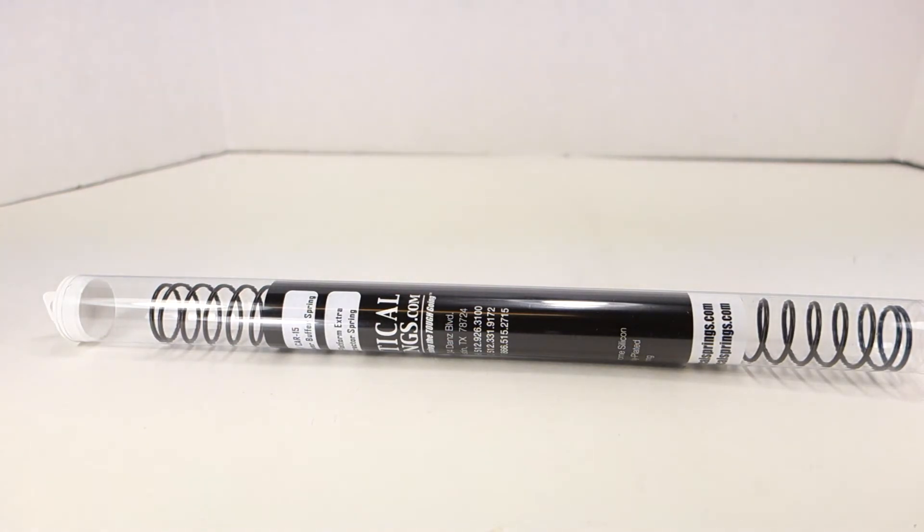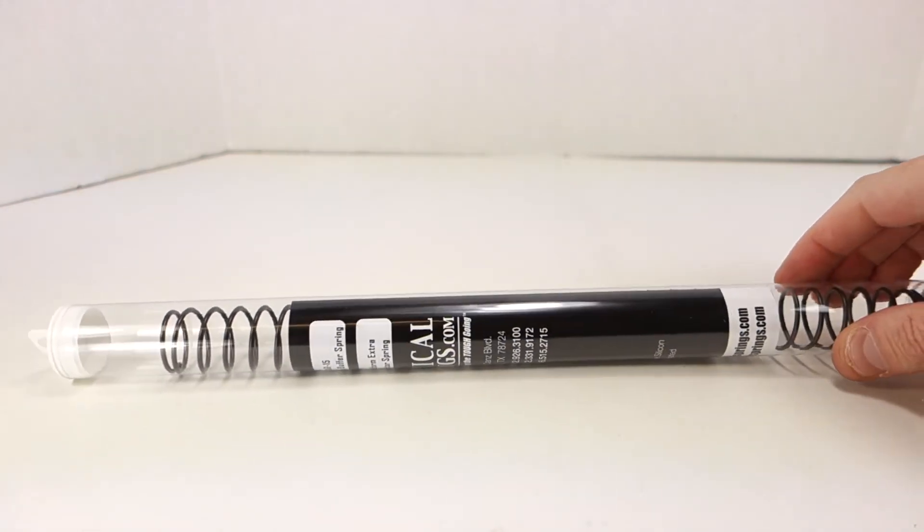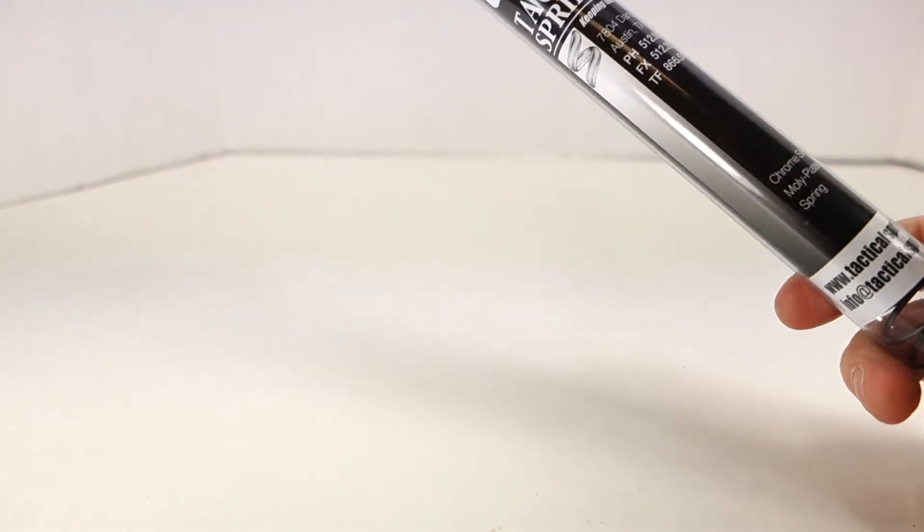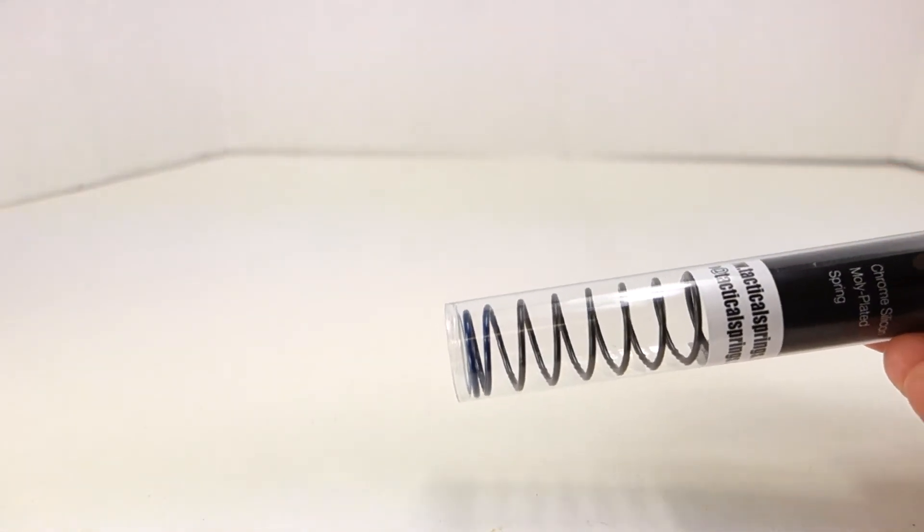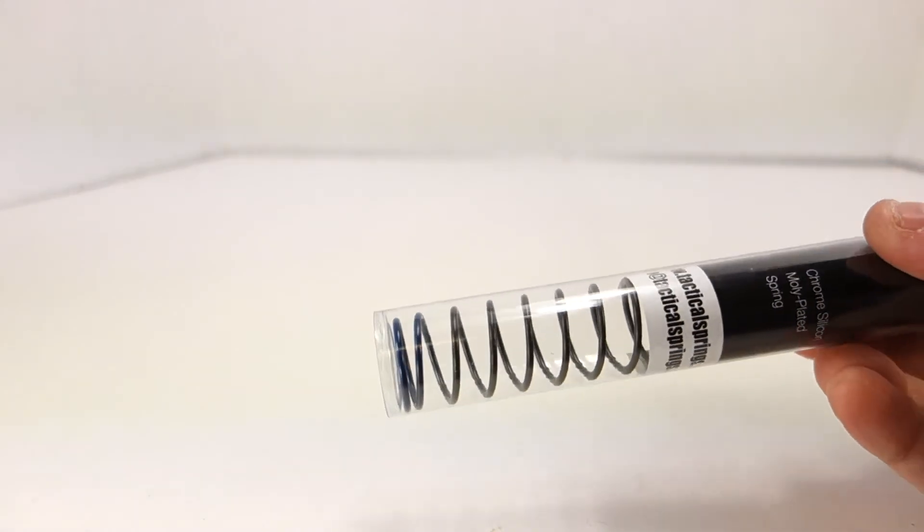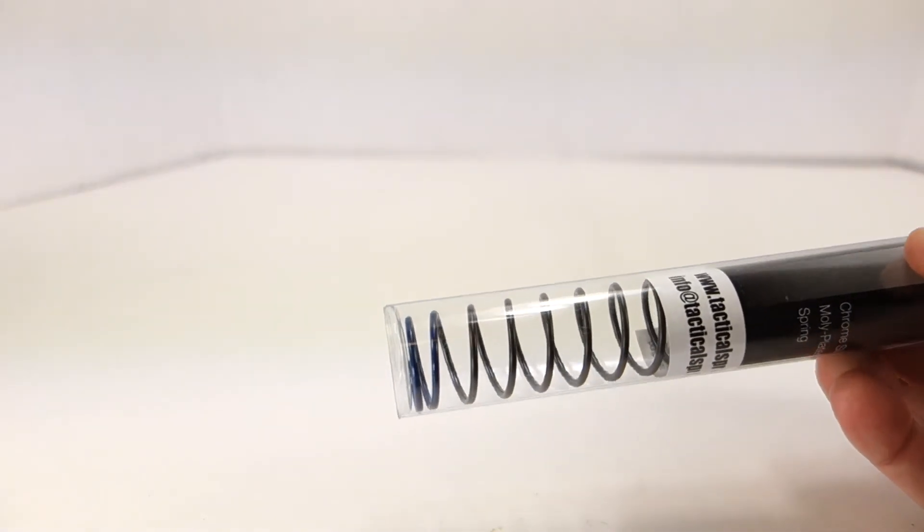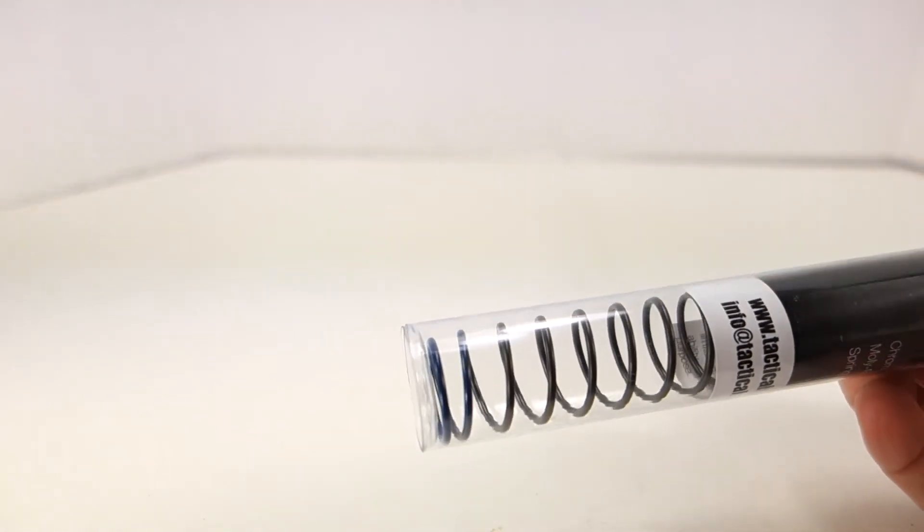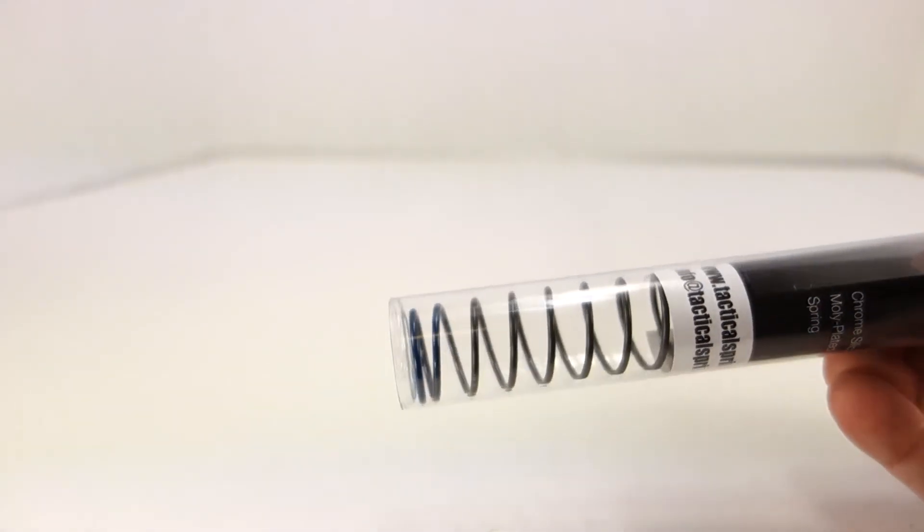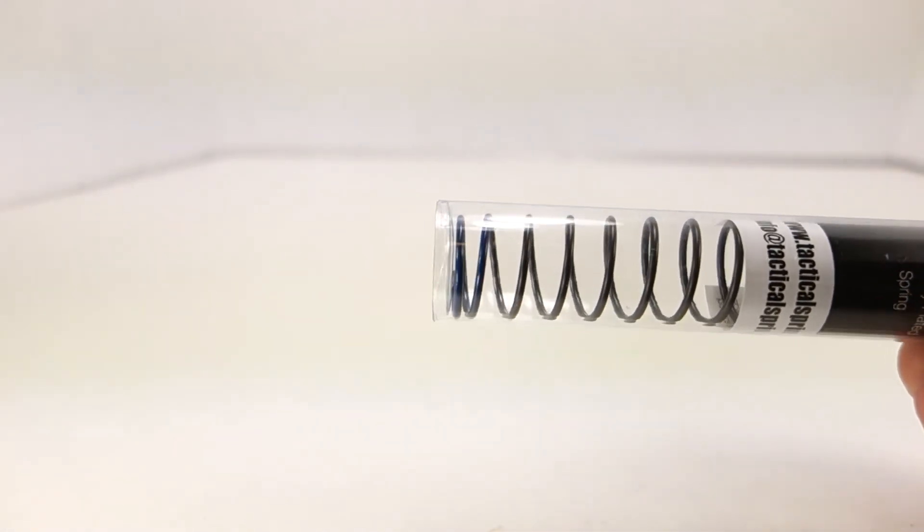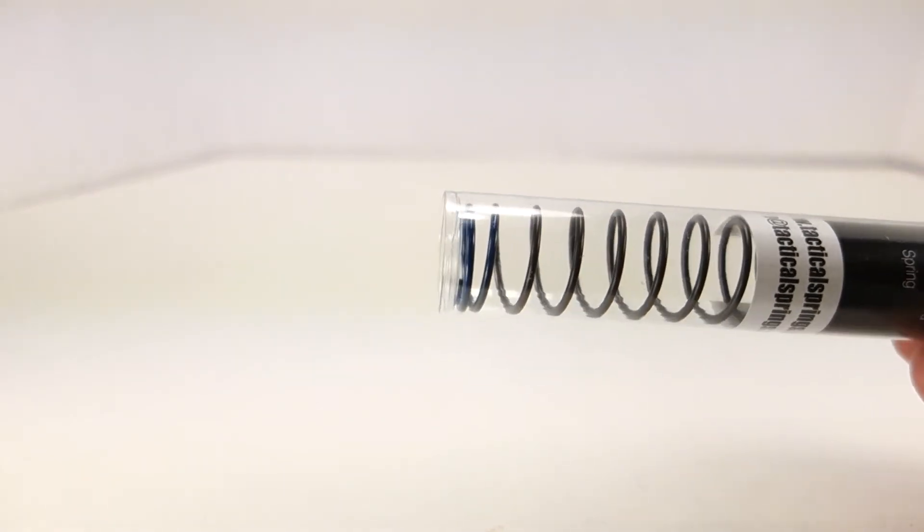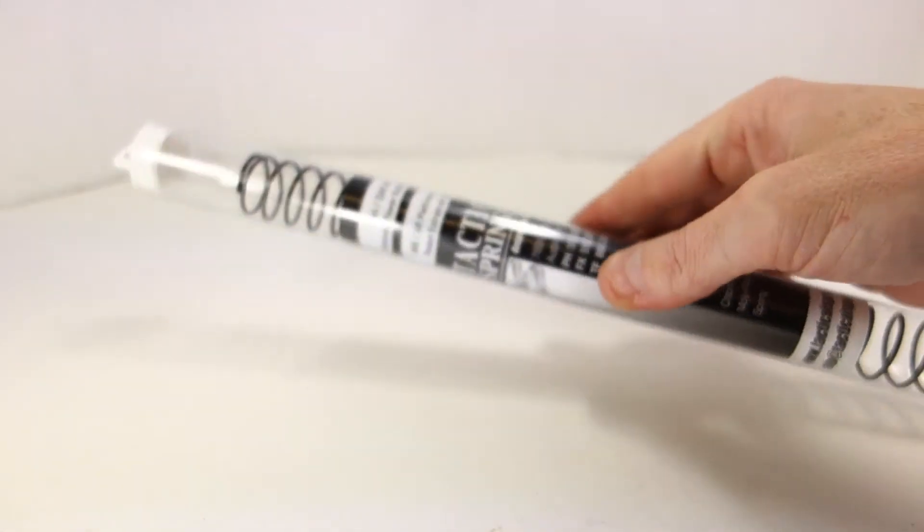Sprinko ships these in this nice protective plastic tube with phone numbers and web addresses. You can tell the related color of the spring - most of these springs are dark grayish color, but at the very bottom they're color coordinated. You can see down at this end it's got some blue paint on it to indicate this is the blue power spring.